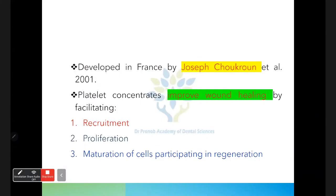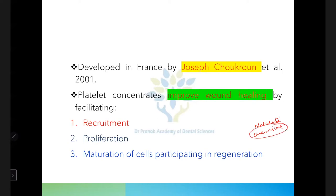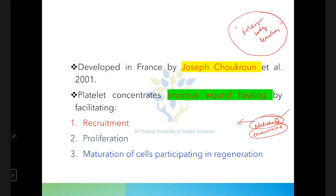To accelerate wound healing, we can use different biomaterials — natural or chemically fabricated. PRF is a natural product. With foreign materials, there might be a foreign body reaction, whereas PRF is naturally prepared. PRF was first developed in France by Joseph Choukroun — you need to remember this name. Choukroun was the person who introduced the PRF concept.